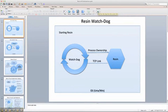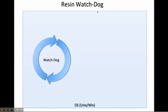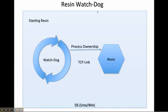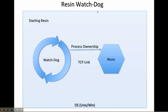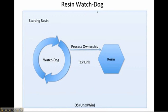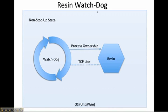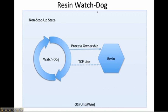WatchDog is a lightweight process that starts up the Resin Java application server. The WatchDog process uses the same tricks clustering software uses to make sure that the Resin application server stays up. If the socket connection goes down, then Resin gets restarted. If the child process goes away, then Resin gets restarted.